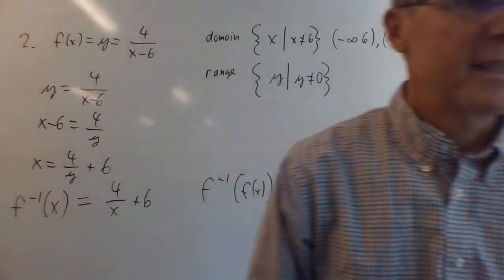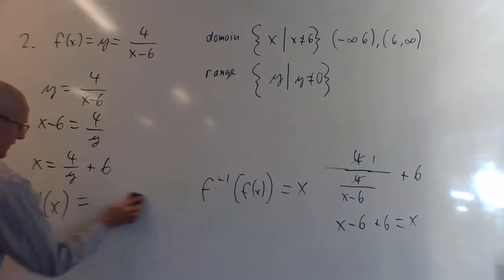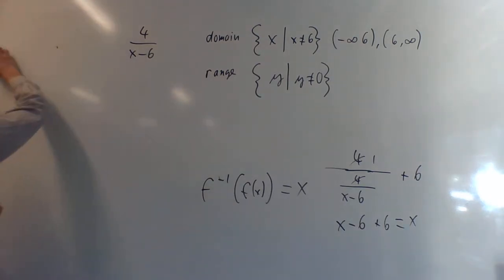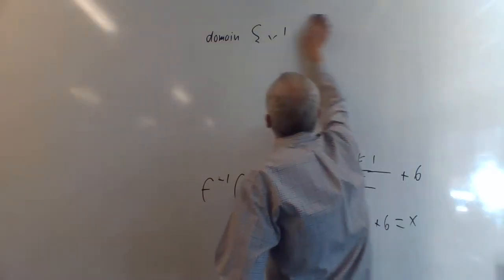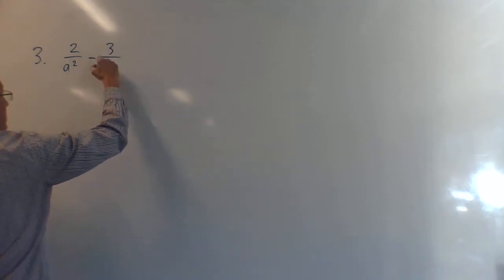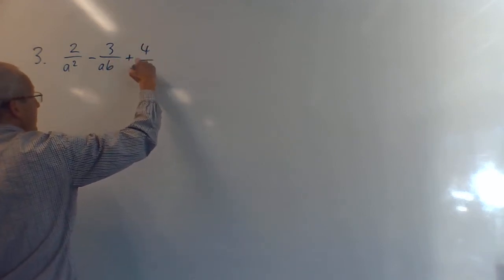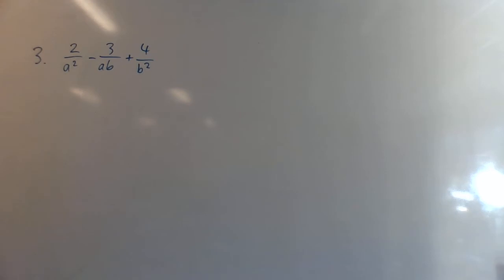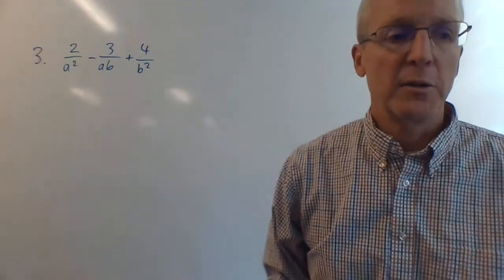That's the first side. Now number three is common denominator practice. We have: 2/a² - 3/(ab) + 4/b². We need a common denominator. This has a², this has b², this has ab — so the least common denominator is a²b².